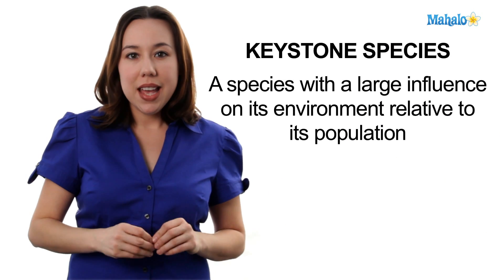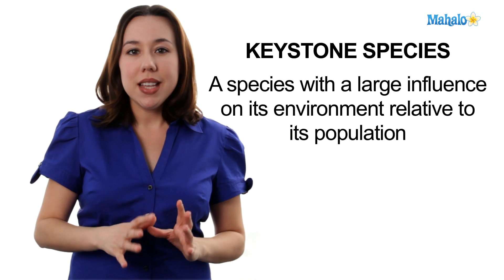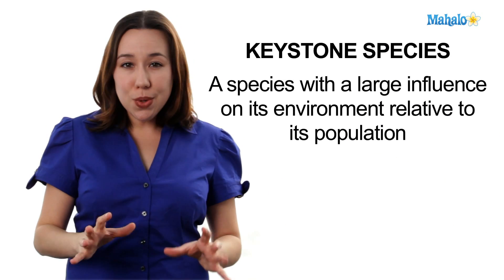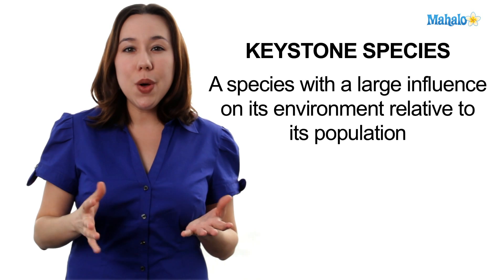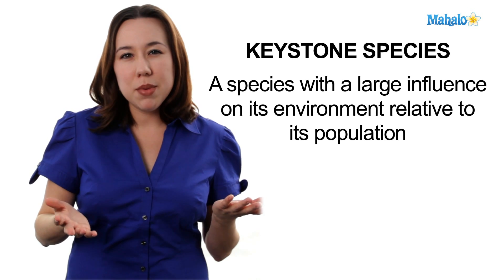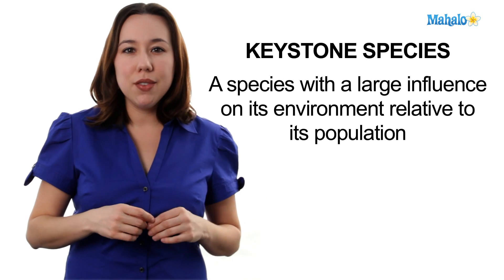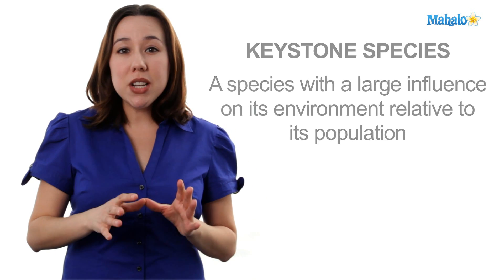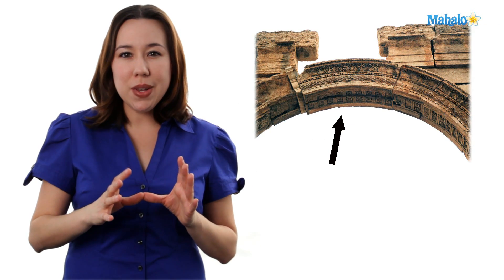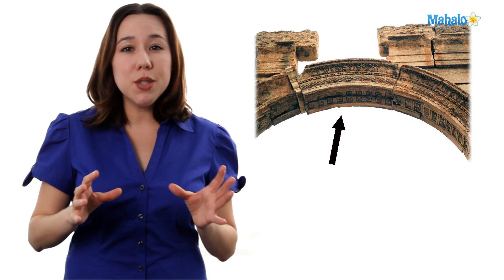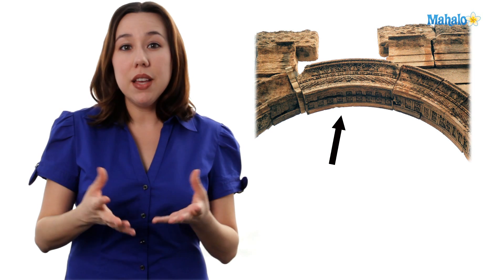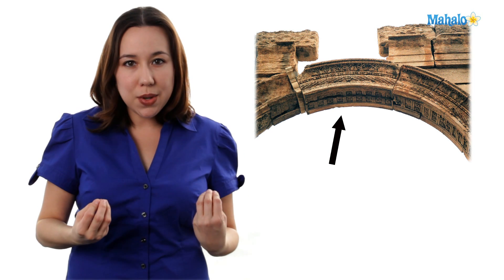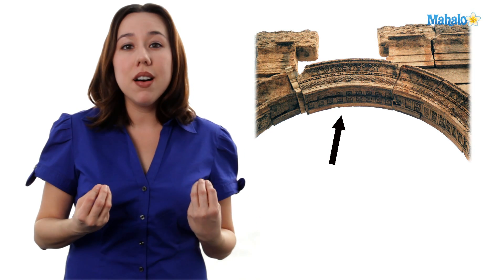A keystone species is a species that has a huge impact on the environment even though its population numbers may be kind of low. Much like a keystone in an arch helps support the entire arch, a keystone species if removed from the ecosystem can cause a collapse.